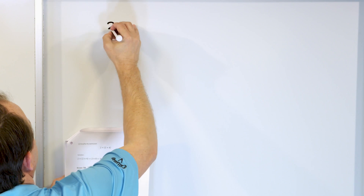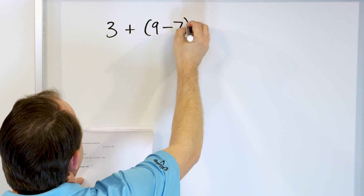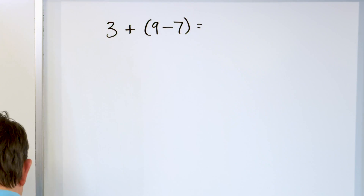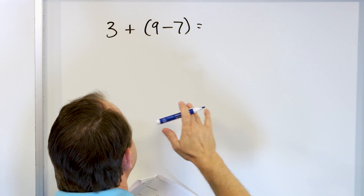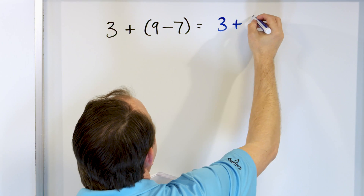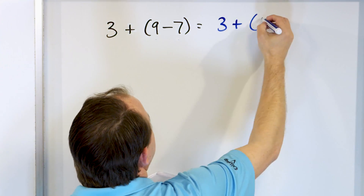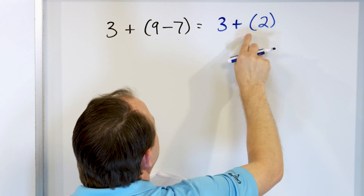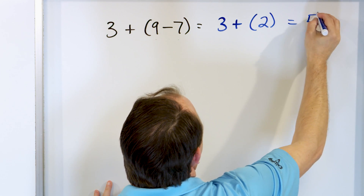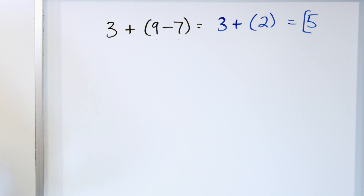Let's look at three plus parentheses nine minus seven. Remember: do what's inside the parentheses first — that means I can't even touch the three plus yet. Nine minus seven is two. Now I have three plus two, which is five. The answer is five.